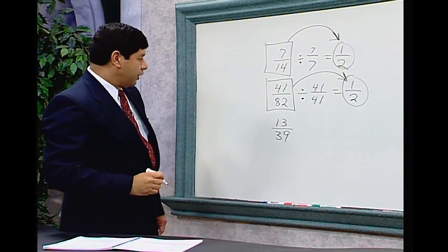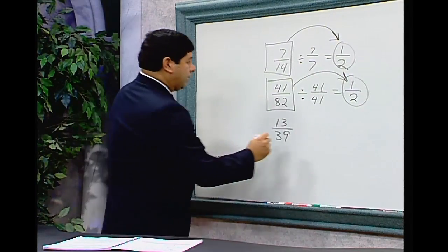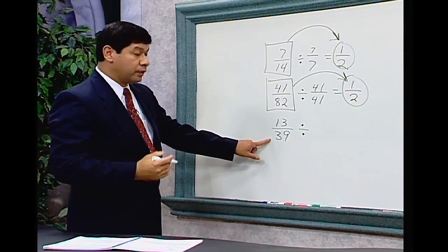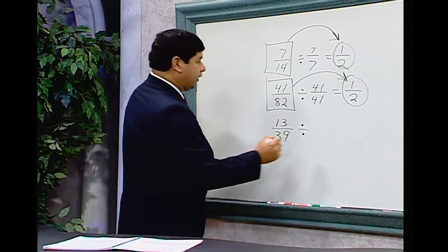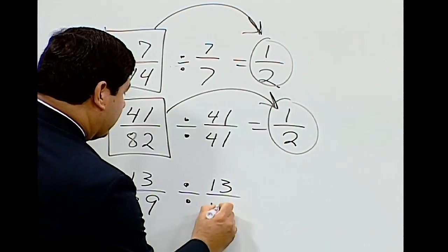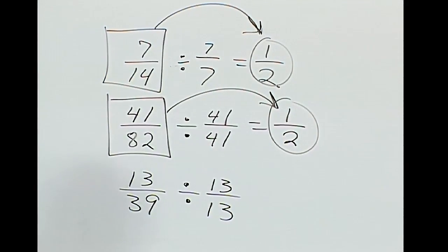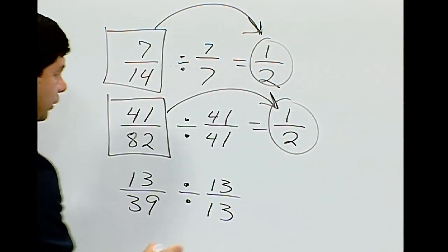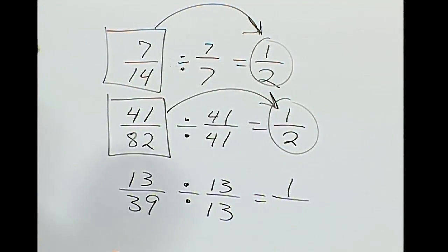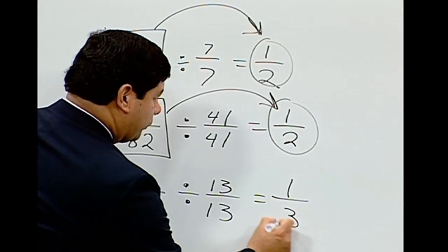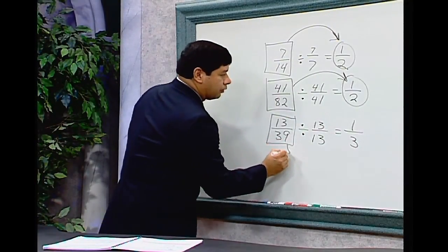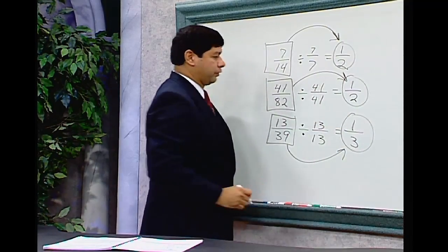Our last fraction is 13 over 39. Check if 13 divides into 39 evenly — it does, 3 times. Divide numerator and denominator by 13. 13 divided by 13 is 1, and 39 divided by 13 is 3. So 13 over 39 reduces to 1 third.